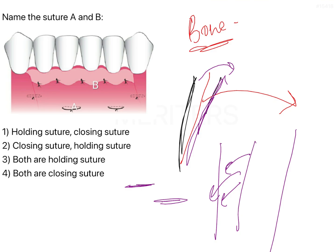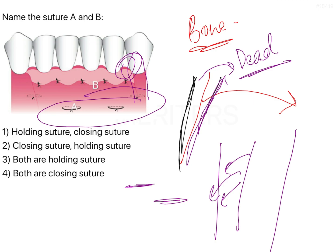In addition, holding sutures are given because the mucosa also should be held in place. It is a coronally advanced flap, so if a suture is given only in the coronal area and the apical area is left as it is, there is a possibility of dehiscence or a dead space. To prevent that, a suture is given in the transverse direction in the lower region as well, so that a closed space is maintained. This is called a holding suture.